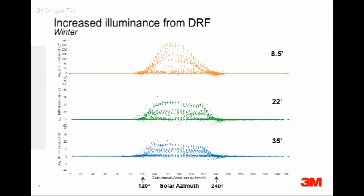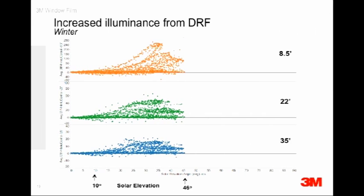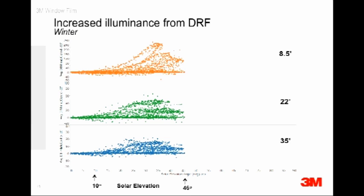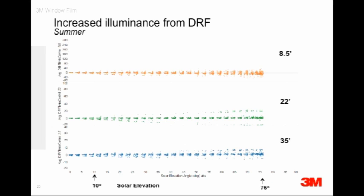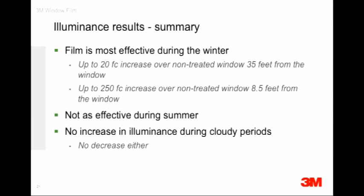Looking at the data we collected: at three different depths from the window, the film works very well during winter — you can get around 200 lux at 35 feet from the window in wintertime, plotted as a function of solar azimuth. In summertime you don't get as much improvement in illuminance; however, 100 lux at 35 feet from the window is still quite good. Looking at the same data as a function of solar elevation, the film works very well in winter and up to about 20 foot-candle increase is seen compared to a non-treated window.